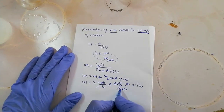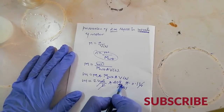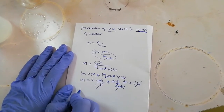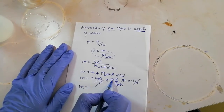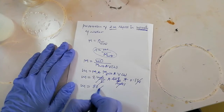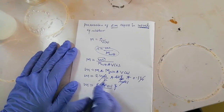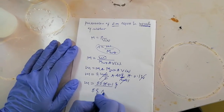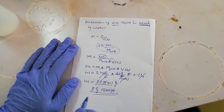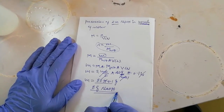Mol is cancelled by mol, and liter is cancelled by liter. What is left is grams, which is the unit of mass. So mass = 2 × 40 × 0.1 = 8 grams of sodium hydroxide is needed to prepare a 2-molarity sodium hydroxide solution.